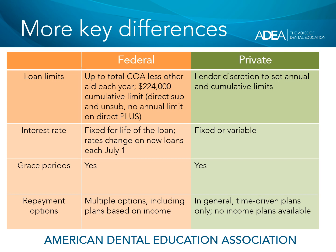In terms of repayment options, federal loans have it all over private loans because there are multiple options, including time-based plans and multiple repayment plans based on income. With private loans, in general, only time-driven plans are available, meaning the lender will take the amount you borrow — principal and interest — and amortize or spread it out over a designated period of time, such as perhaps 10 or 15 years. There are absolutely no income-based plans available to repay private loans. That's a very important difference, and one reason federal loans have much more flexibility in terms of repayment options than do private loans.